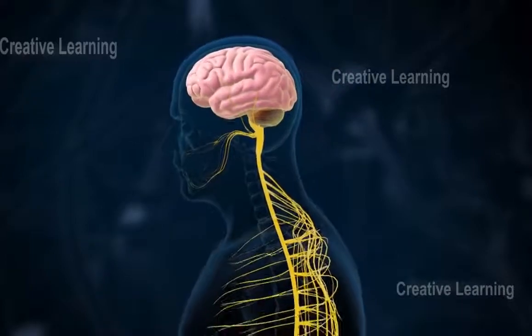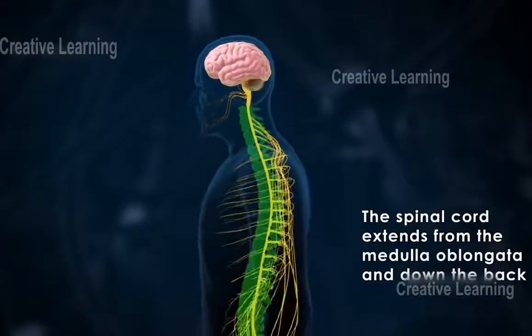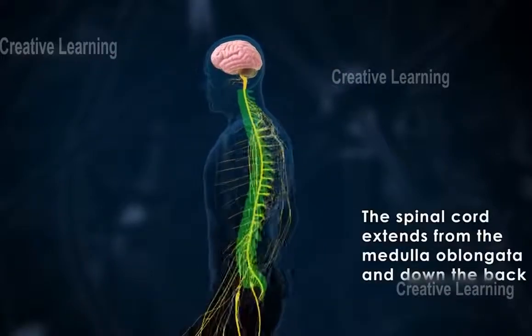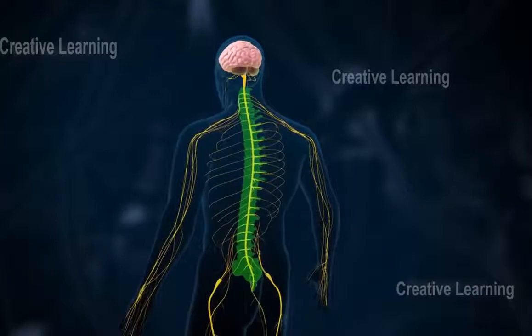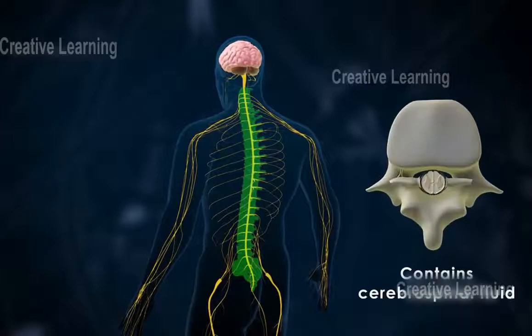The spinal cord extends from the medulla oblongata and down the back. It is protected by the vertebral column. The spinal cord is a hollow tube containing cerebrospinal fluid.